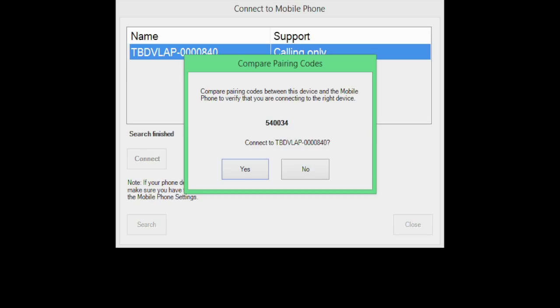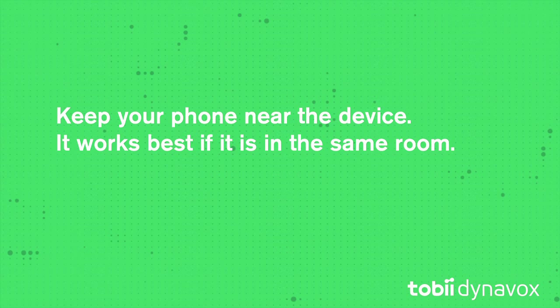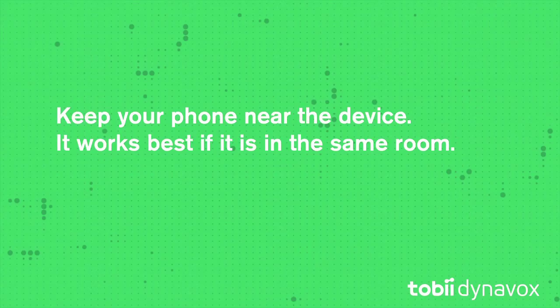Your phone may prompt you to allow Communicator to access your messages. Press Allow and then OK on the device. Your phone needs to be kept near your device — it typically works best if it's in the same room. If your phone becomes out of range, it will automatically connect when back in range.